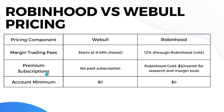For premium subscriptions, Webull has no paid subscription — only a basic subscription — while Robinhood offers Robinhood Gold at five dollars per month for research and margin tools. That's it for the pricing comparison.